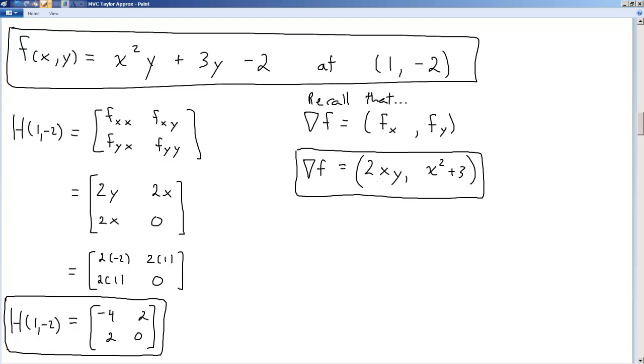Well, now we're going to take the partial derivative of this with respect to x, then with respect to y, get 2y and 2x. We'll take the derivative of this with respect to x, and this with respect to y, and get 2x and 0. Then we evaluate this at x equals 1, y equals -2, and we get this 2 by 2 matrix, which is the Hessian evaluated at 1, -2.